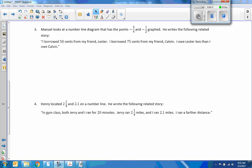Number three. Manuel looks at a number line diagram that has the point negative three-fourths and negative one-half graphed. He writes the following related story. I borrowed fifty cents from my friend Lester. That's negative one-half. I borrowed seventy-five cents from my friend Calvin. That's negative three-quarters of a dollar. I owe Lester less than I owe Calvin. Do you agree or disagree? This is agreed. Negative three-quarters equals negative .75. And negative one-half is equivalent to negative .5. Negative .5 and negative .75 will show that he owes money, but negative fifty cents is further to the right on the number line, so Manuel does not owe Lester as much as he owes Calvin. So that's another agree.